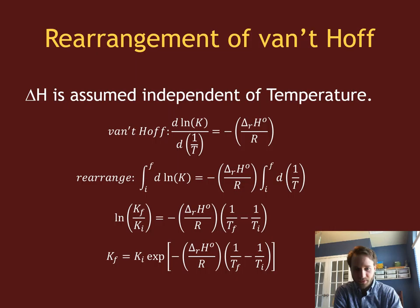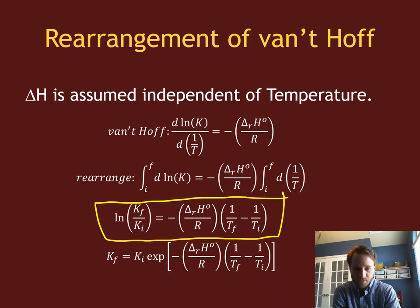Now, if delta H is independent of temperature, we can integrate out this van't Hoff equation for some initial and final temperature to get this equation here, which is that the natural log of the final K over the initial K is equal to minus delta H of the reaction divided by R times the difference of 1 over the temperature.